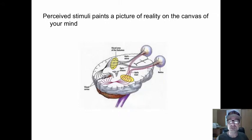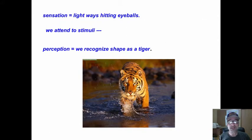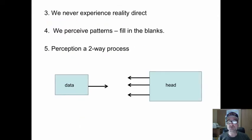Perceived stimuli creates a picture on the canvas of our mind. It doesn't replicate. It creates patterns and we fill in the blank. Sensation, light hitting eyeballs, attend to stimuli. Perception, we recognize that as a tiger.